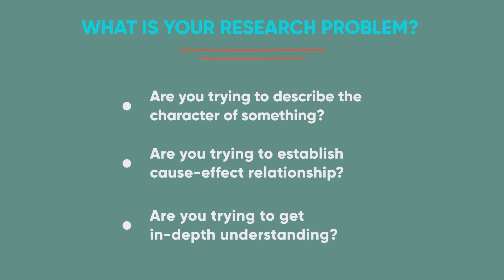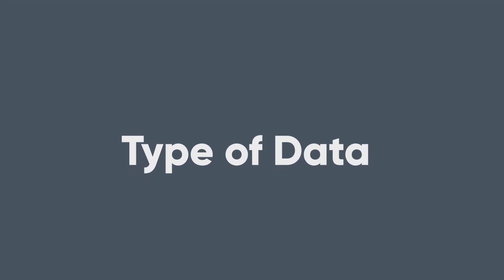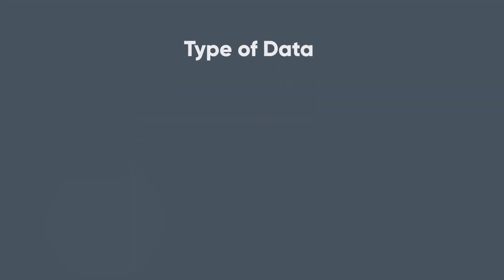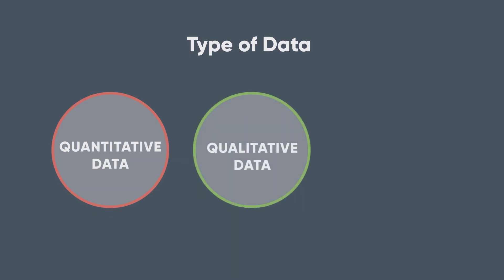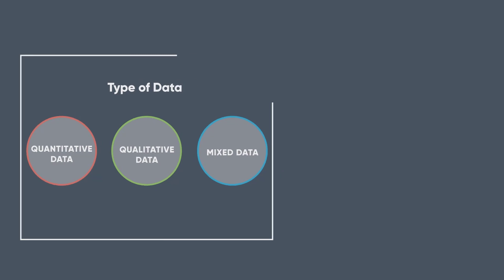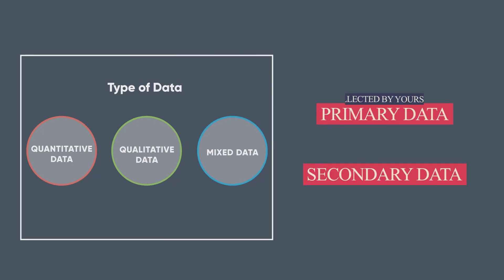Now to answer those questions, what type of data you need to collect? Quantitative data or qualitative data or mixed data? Quantitative data are expressed in numbers, whereas qualitative data are expressed in words. Is it a primary data or secondary data? Primary data is collected by yourself, whereas secondary data is collected by someone else.